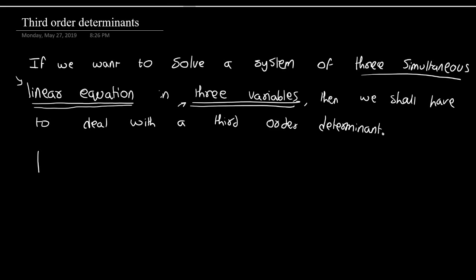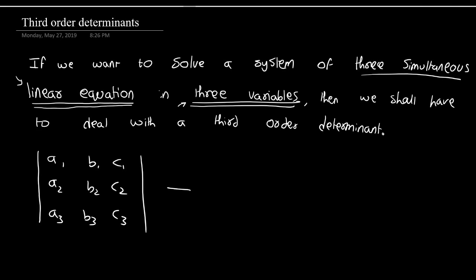An example of a third order determinant is this one. This is how you write a third order determinant. In the third order determinant, it is basically a three by three matrix.